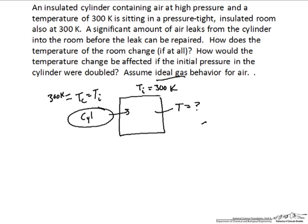What I'm going to do is take as the system the room — specifically the air that's the contents of our room — and not the cylinder. It's going to be an open system because we have material from the cylinder flowing into the room. We can write our energy balance for this system as: the total change in internal energy equals the number of moles that cross into our system times the enthalpy of that stream, which is the enthalpy of the gas inside the cylinder.